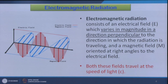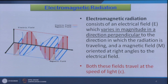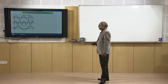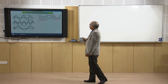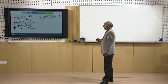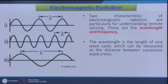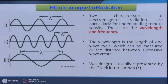Both these fields travel at the speed of light. Two characteristics of electromagnetic radiations are particularly wavelength and frequency. Different wavelength waves are shown with their frequency. The wavelength is the length of one wave cycle, denoted by lambda, and can be measured as the distance between successive wave crests. In this example the lambda is much longer here and shorter there.